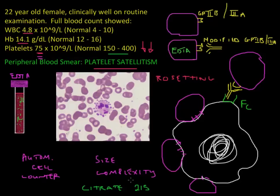For all practical purposes, when you see a patient with a low platelet count and the peripheral blood smear report shows platelet satellitism, you must repeat the count on a different anticoagulant like citrate to get a true value before starting any investigations that may be costly or dangerous to your patient.